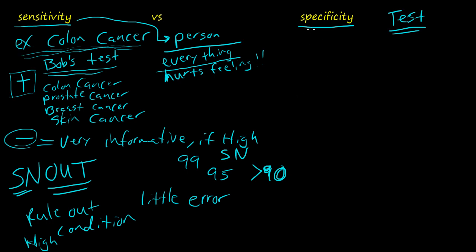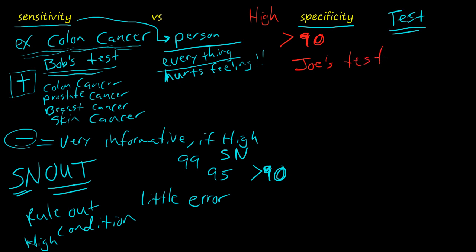Now let's talk about specificity. We're going to use the example of high specificity — greater than 90, for example. If there's a test that has high specificity for colon cancer, let's call it Joe's test. Joe's test has a high specificity for colon cancer, and you suspect your patient has colon cancer — why would you want to run Joe's test?